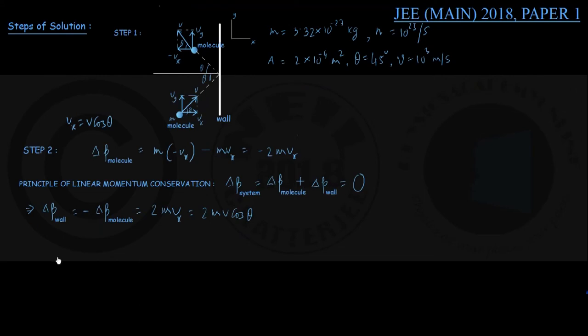Before I go to the next step, we note that this last result is the momentum change of the wall per collision. So in step number 3, we will find out momentum change of the wall per second. Now what is that?